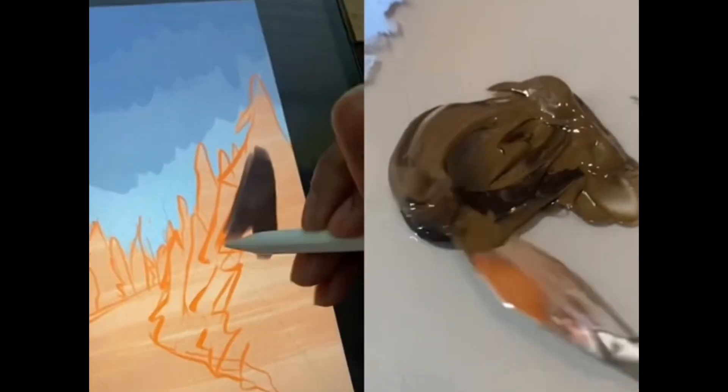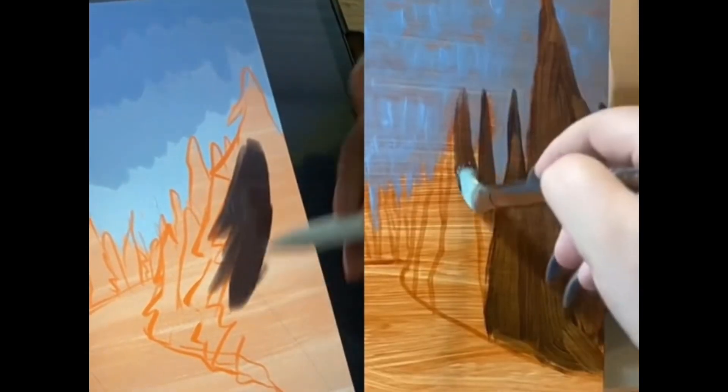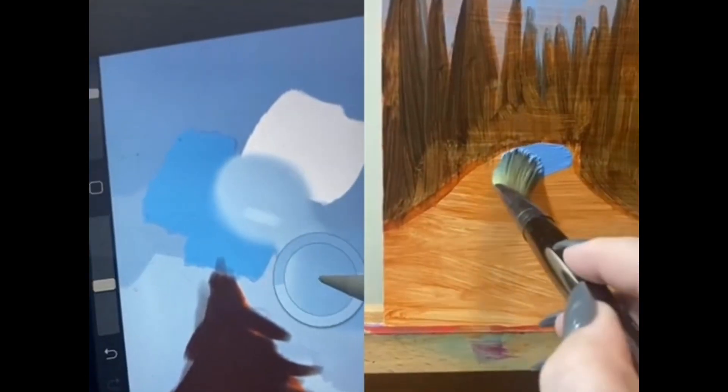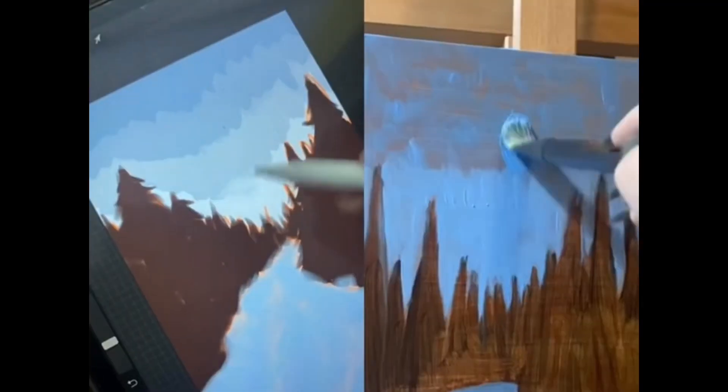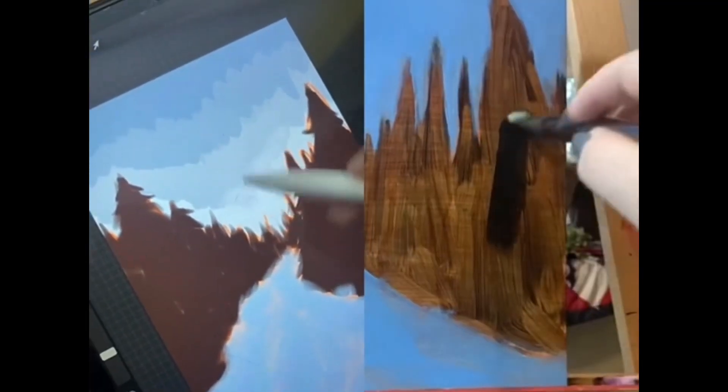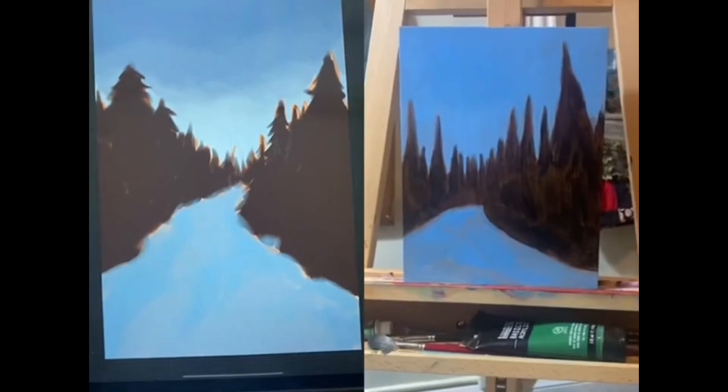Next, I mix up a dark brown and fill in my tree shapes. Taking the same blue I used in the sky, I fill in the snow on the ground. If you use lower quality acrylics like I do, I recommend going over everything a second time to get nice opacity.